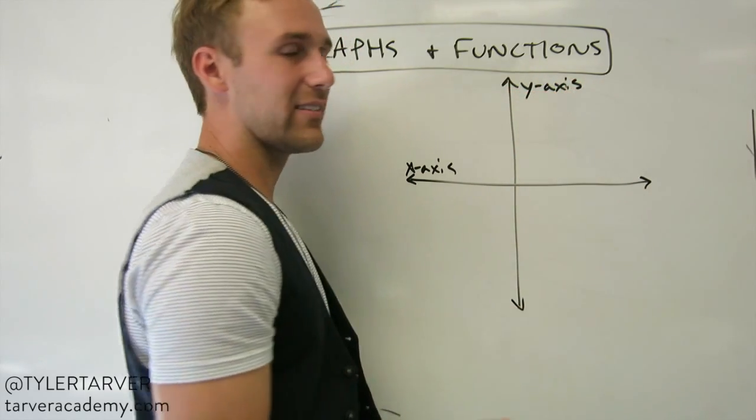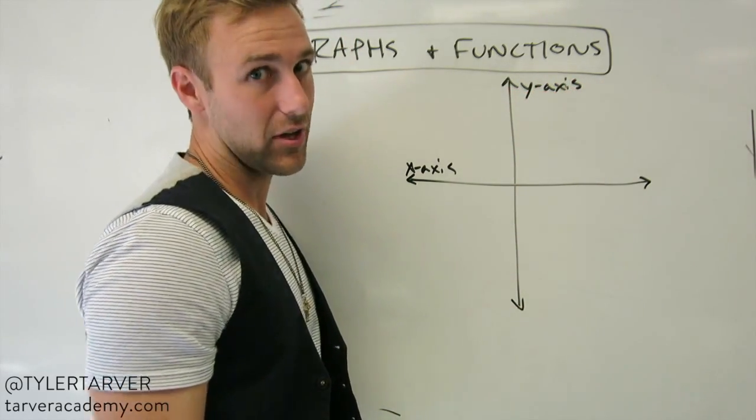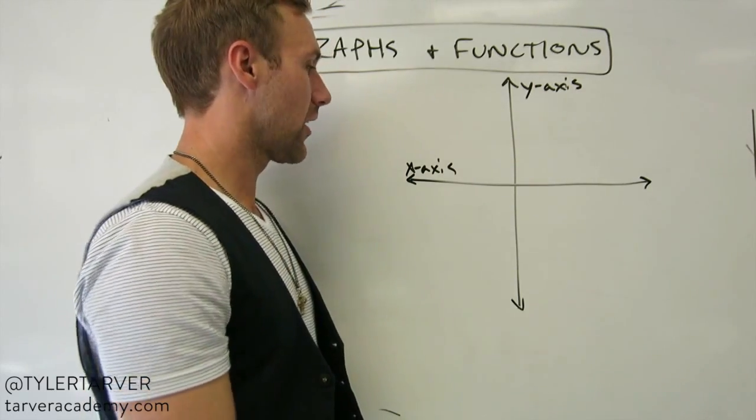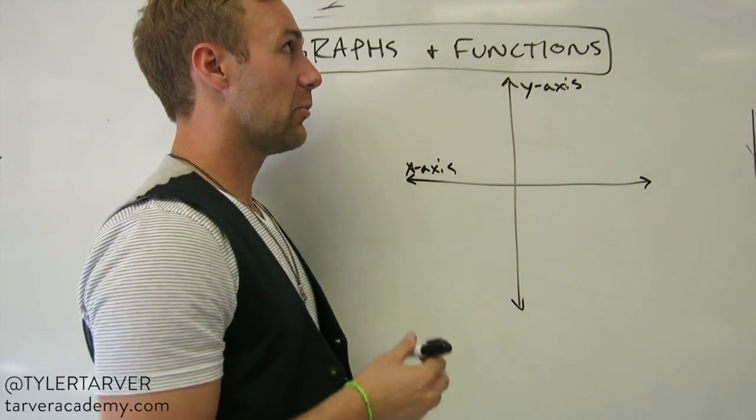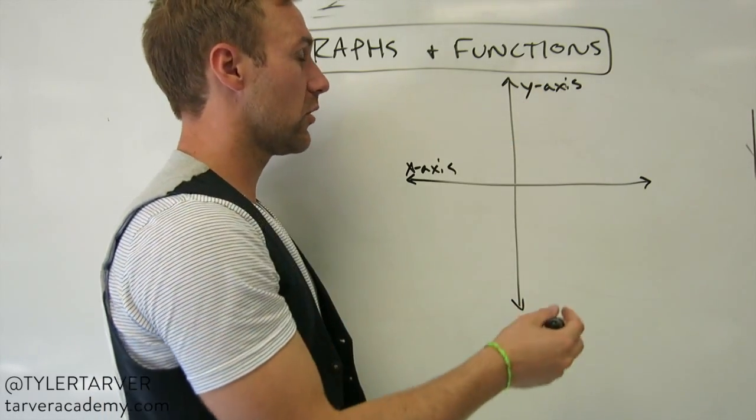And you're thinking, why does it go up and down? Well, you just remembered how to do this. X-axis goes across. Y-axis goes up and down. Within that, this is vertical. This is horizontal.